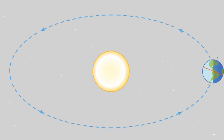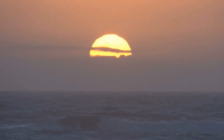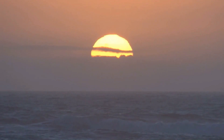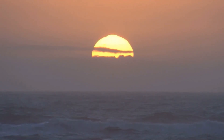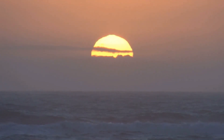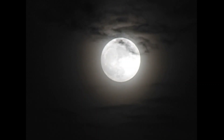As the Earth orbits, its distance from the sun changes slightly during the year, causing a change in the apparent size of the sun to observers on Earth. The moon revolves around the Earth in a slightly elliptical orbit as well.